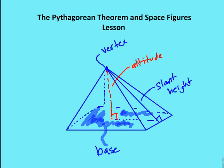Now we're going to talk about a pyramid. I have a base of the pyramid and a vertex. I have the altitude, which is the distance from the vertex to the base that makes a right angle with the base. I have the slant height, which is the length from the vertex down to an edge of the base that makes a right angle with the base. And then I have an edge — so vertex, base, a face of the pyramid, an edge, and the slant height.